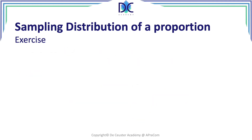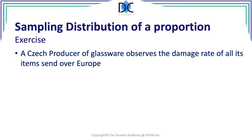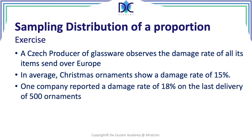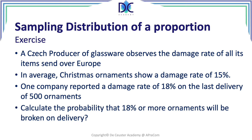Now let's have a look at an exercise using a real-world example. We look at a Czech producer of glassware — they send items all over Europe and find that there is a damage rate of around 15%. They send out Christmas ornaments and show a damage rate of 15%. One company reported a damage rate of 18% on the last delivery of 500 ornaments. We want to find the probability that 18% or more ornaments will be broken on delivery, applying the formulas and properties of the normal distribution.